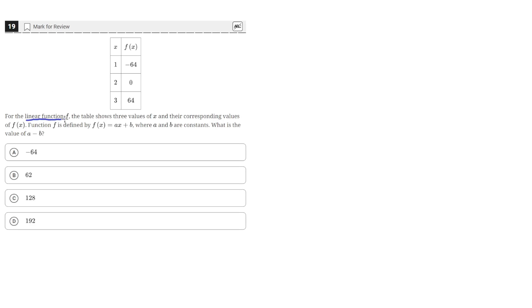For the linear function f, the table shows three values of x and their corresponding values of f(x). Function f is defined by f(x) equals ax plus b, where a and b are constants. What is the value of a minus b?